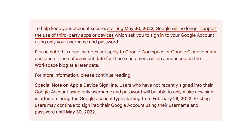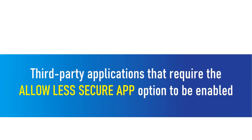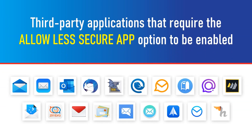When you use the Gmail app, you may use your Google login and password to log into other devices and services. Until today, it was possible to use Gmail SMTP with this option enabled to send emails from third-party app services. As of right now, Google has made the decision to disable less secure apps access in Gmail, starting on May 30, 2022.